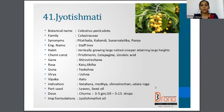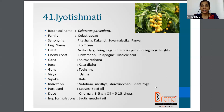The next drug is Jyotishmati, botanical name Celastrus paniculatus, family Celastraceae. Synonyms are Kanguni, Suvarnalata, etc. The English name is Staff Tree. The part used is leaves and seed oil. The dosage of Churna is 3 to 5 gram and the oil dosage is 5 to 15 drops.